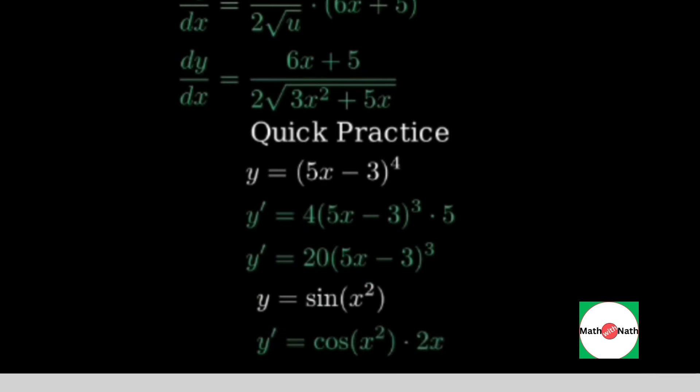Example two, y equals sine of x squared. Outer derivative is cosine, evaluated at x squared, multiplied by the derivative of the inside, which is 2x. So y prime equals cosine of x squared times 2x.